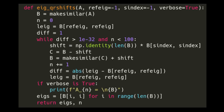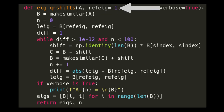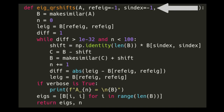Here is the QR algorithm with shifts for computing eigenvalues. The function accepts an A matrix and has a few parameters: a reference eigenvalue index for tracking precision, a shift index to choose different diagonal values as the shift, and a verbose flag to print each similar matrix as it's computed.